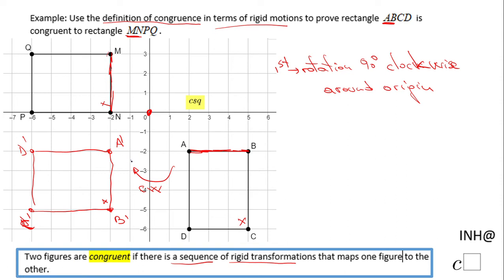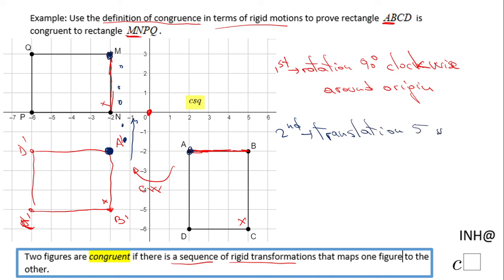Then we need one more rigid transformation: a translation. Looking at two corresponding points — A prime and M — let's count how many units we need to move up: one, two, three, four, five. So the second transformation is a translation five units up.